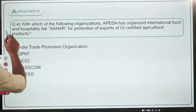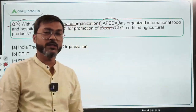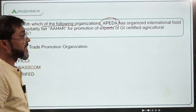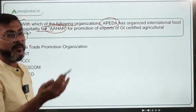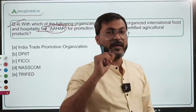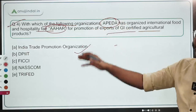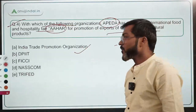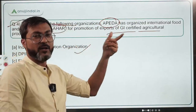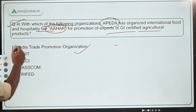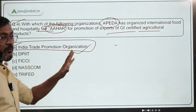Question number four: with which of the following organizations has APEDA — the Agricultural and Processed Foods Export Development Authority — organized the international food and hospitality fair 'Ahar'? Remember this fair's name as it can be asked separately. The fair was organized in collaboration with ITPO for promotion of exports of GI-certified agricultural products. The correct answer is Option A — India Trade Promotion Organization (ITPO).